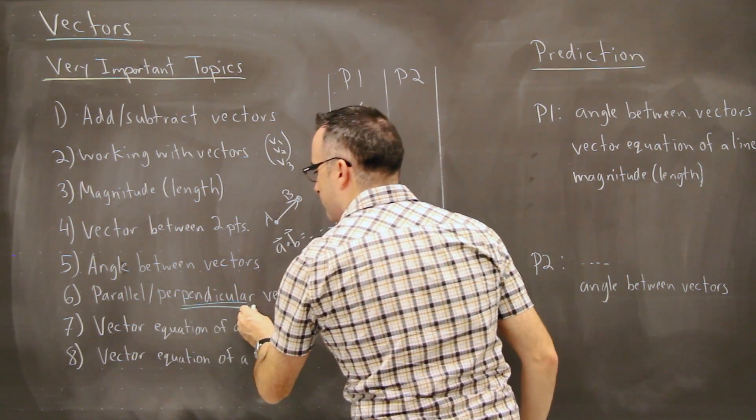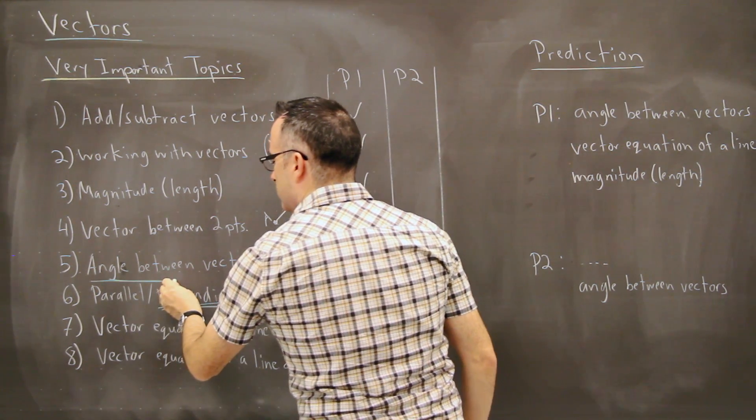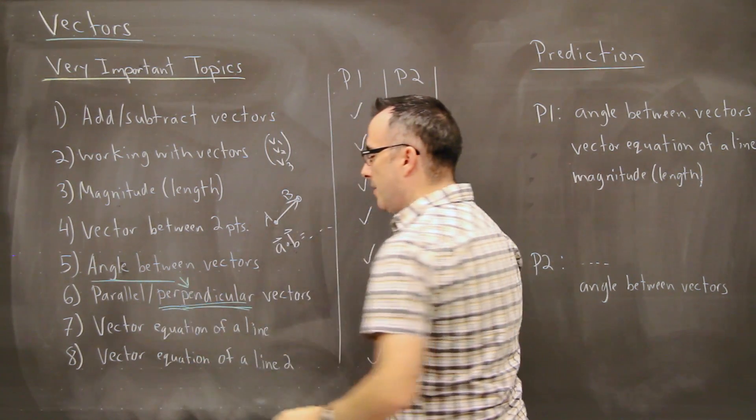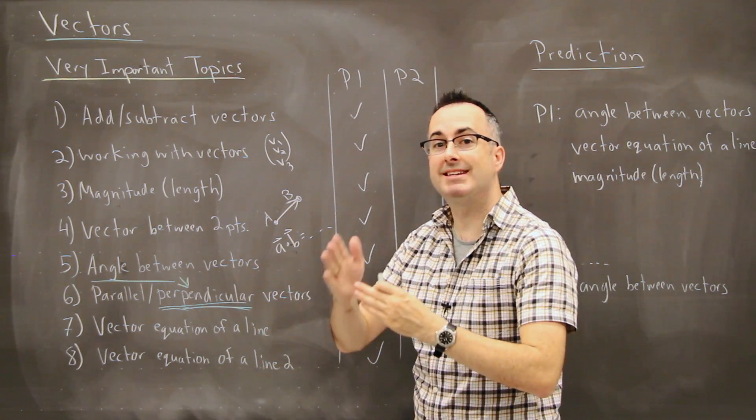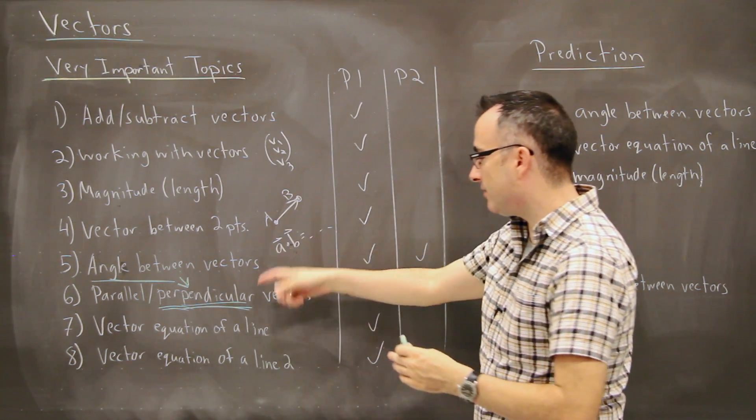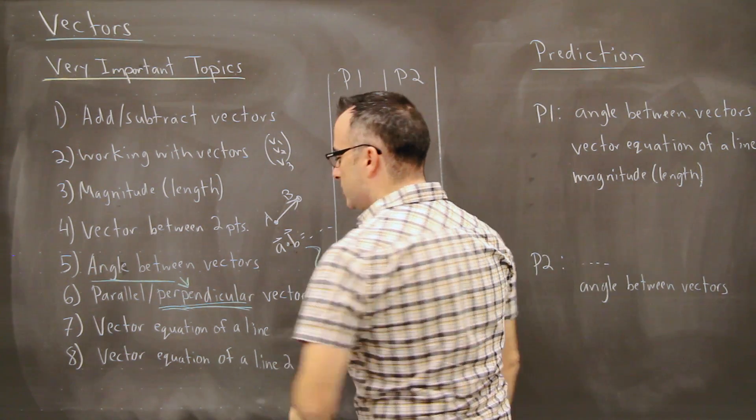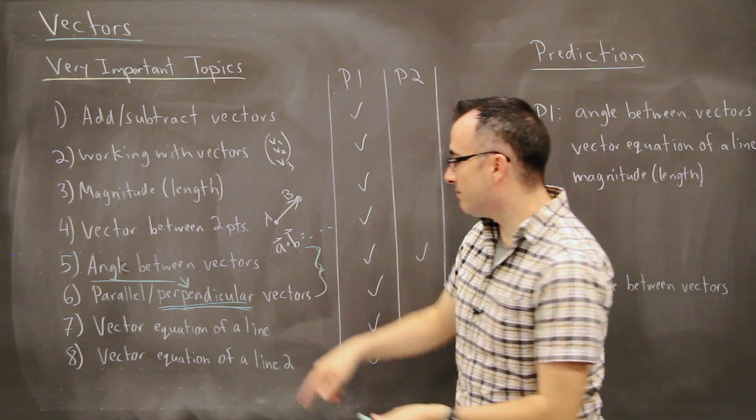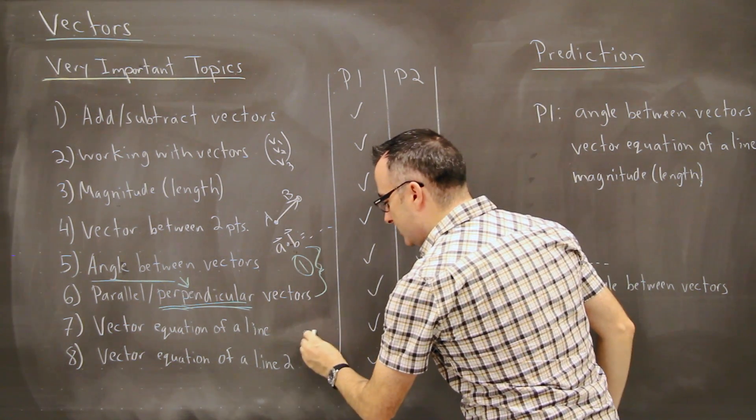But most importantly by far, by far the most common thing that shows up is something with this in here. So the angle between two vectors, and in particular what happens if they're perpendicular. In other words, what happens if the angle between them is 90 degrees. So this is very very commonly occurring. So these pretty much, these show up together, that's how these show up.